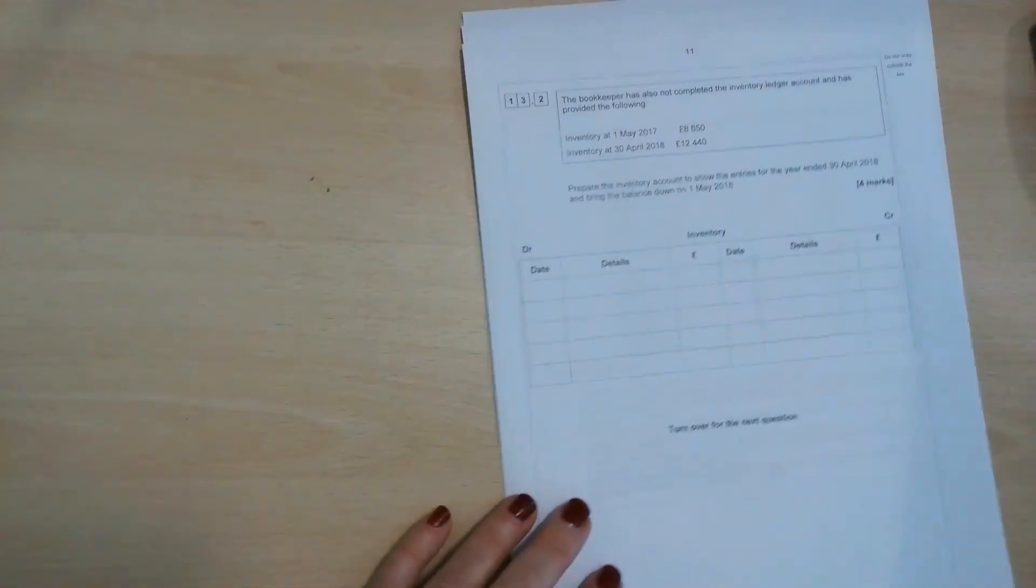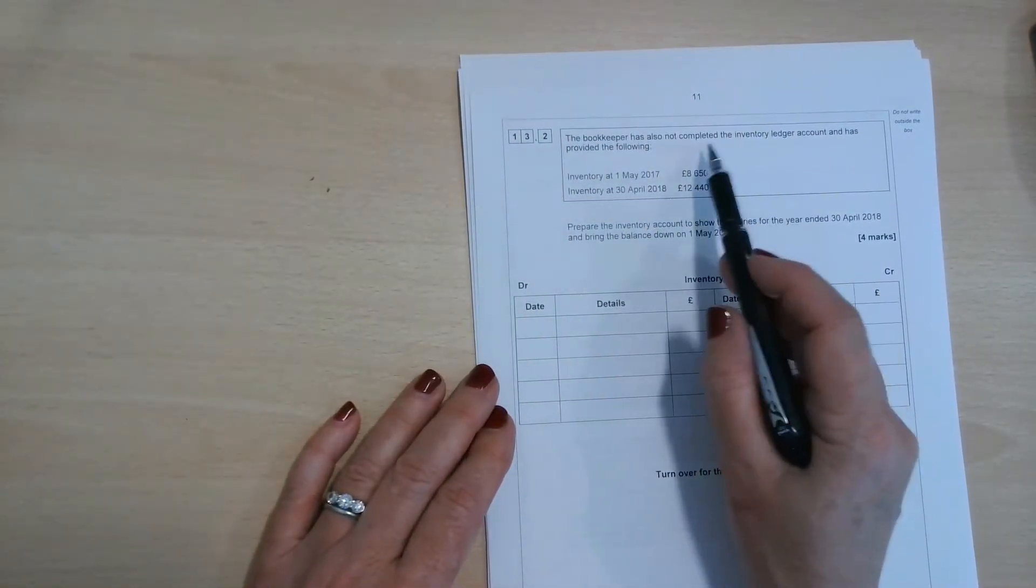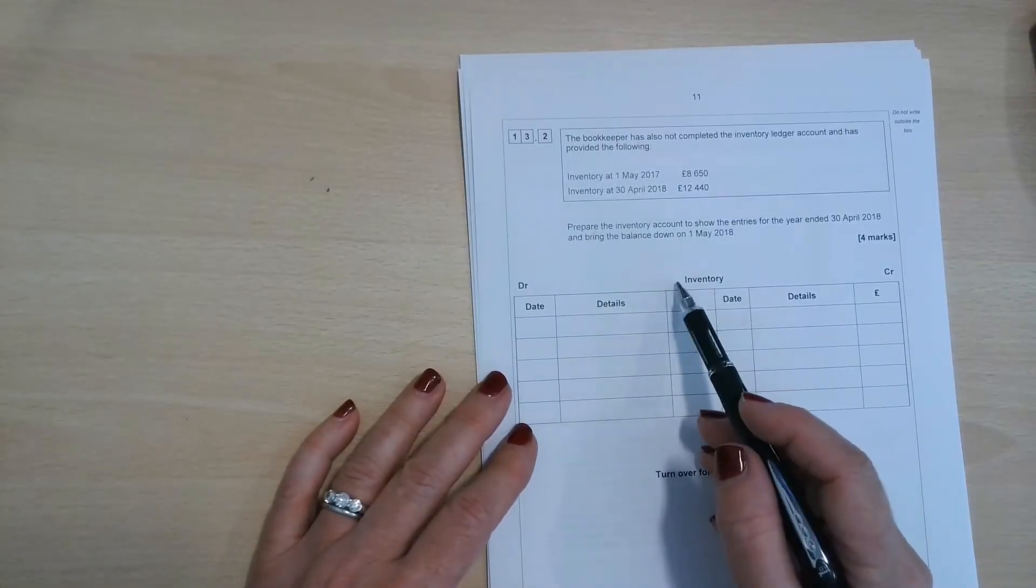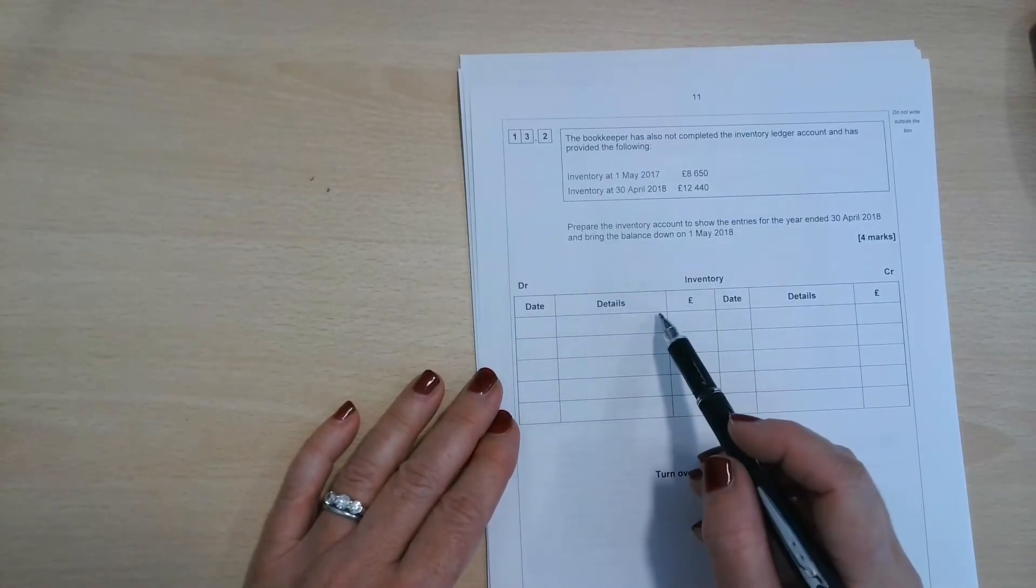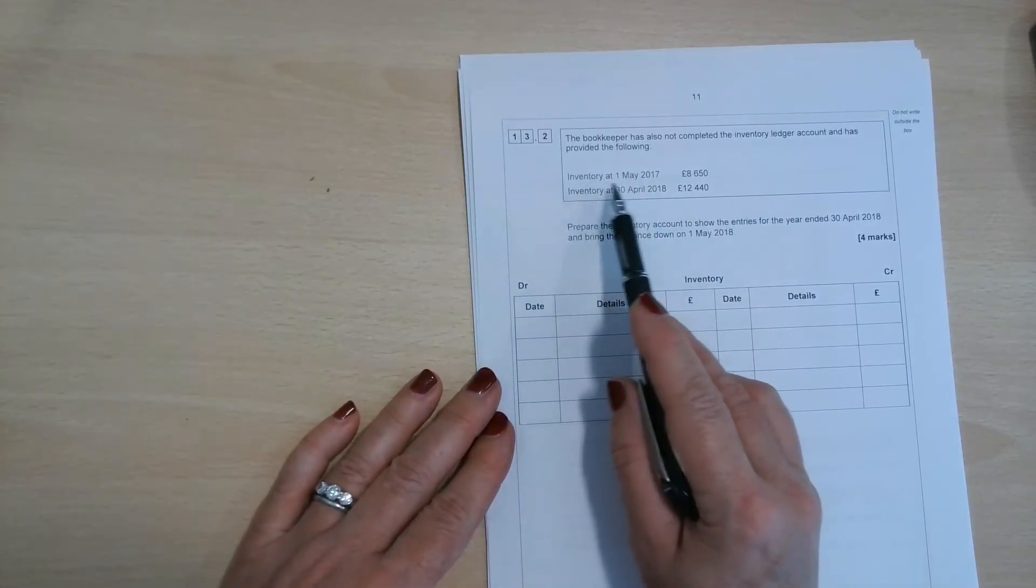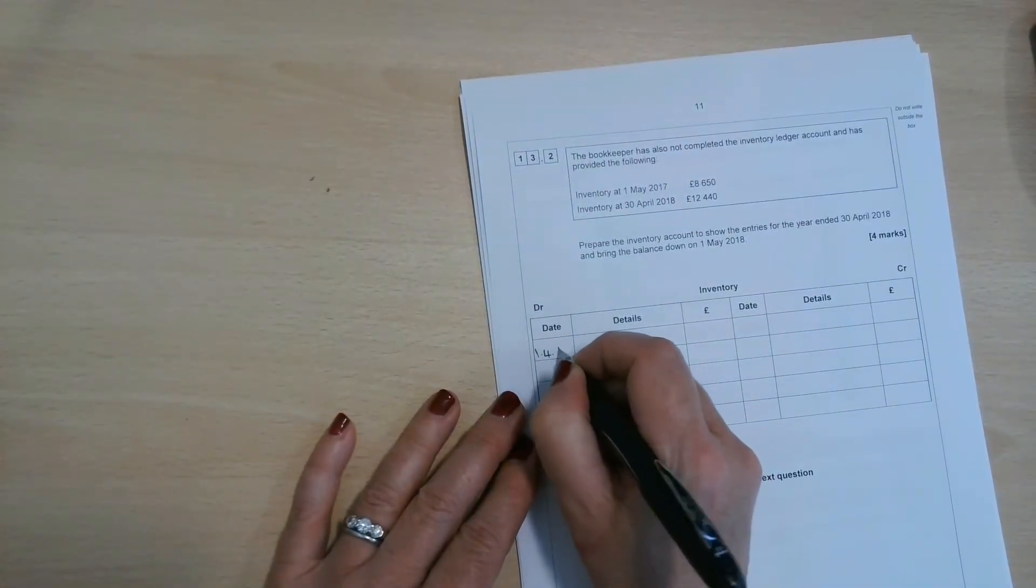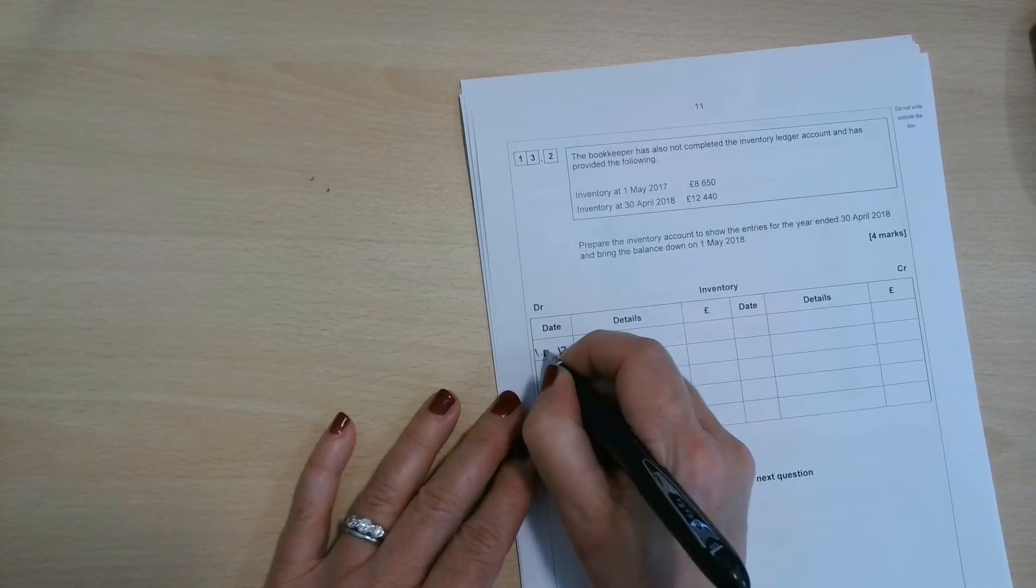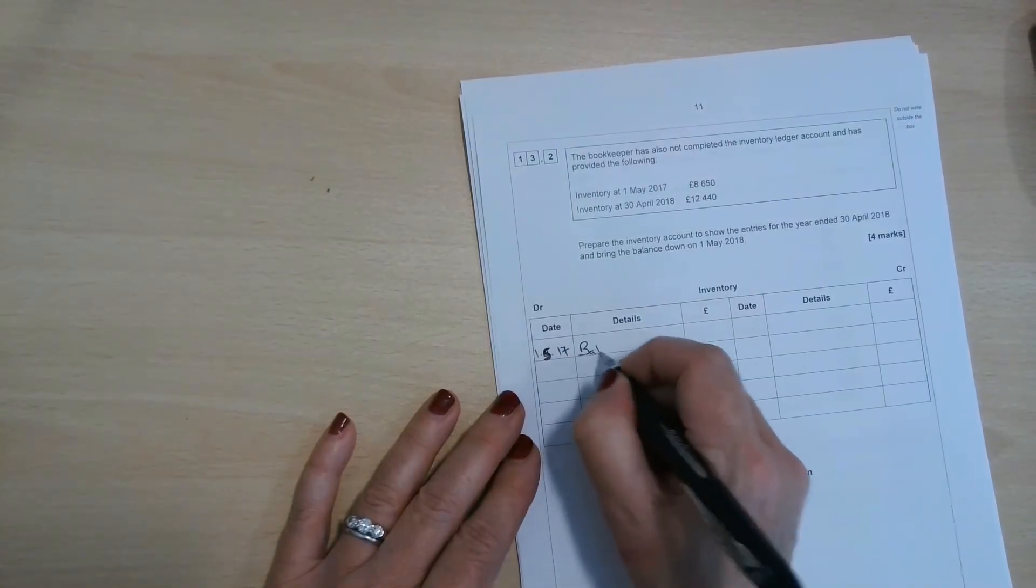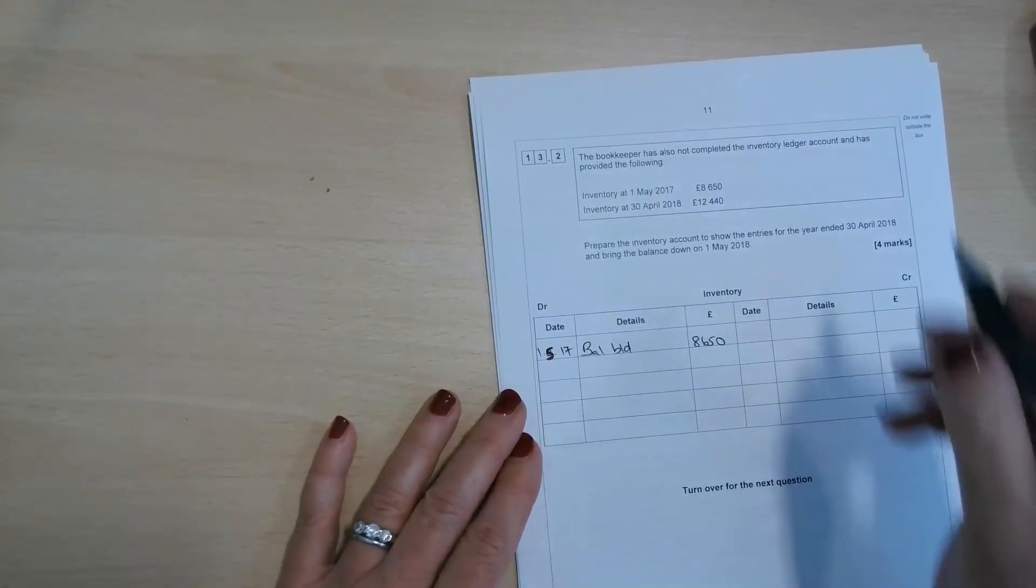There is a part two to this question, which is not to do with depreciation or disposals, but this is about the inventory ledger account. Now, the inventory is a bit of a bizarre one because, remember, opening inventory comes forward from last year's statement of financial position. So this inventory, the 1st of May 2017, is a debit balance because it's come off of the statement of financial position as an asset. I'll put the wrong month in there. May is the 5th. So the BALBD is £8,650.